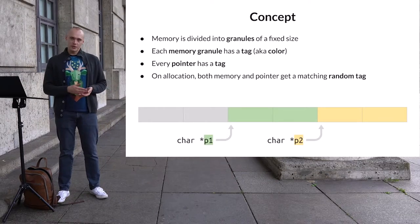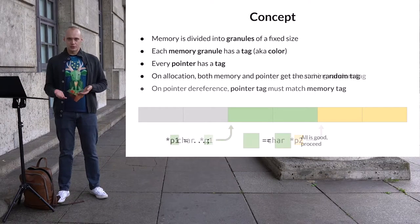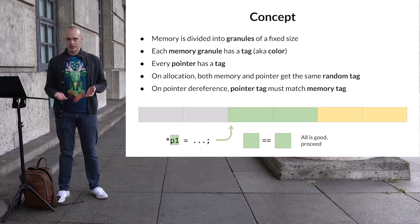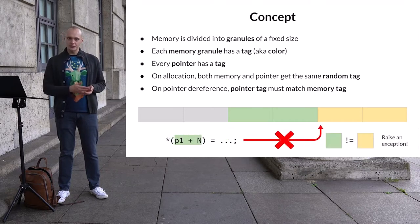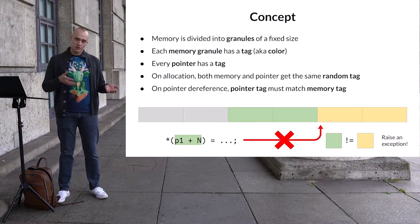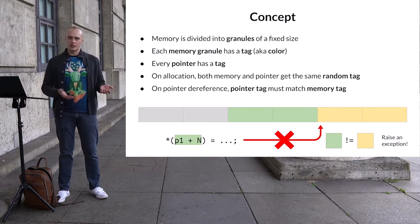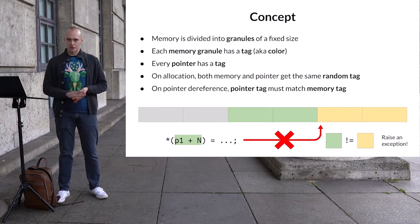Whenever memory is accessed through a pointer, the memory tag is checked against the pointer tag. If the tags are the same, the access is valid and execution continues. However, if the tags are different, this means that the memory is not being accessed through the right pointer. So whenever a mismatch between the pointer tag and the memory tag is detected, there is some kind of memory corruption.